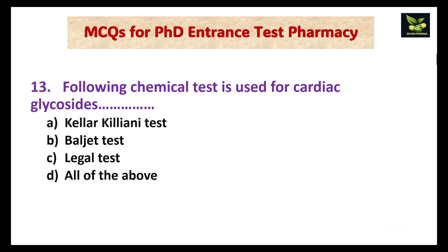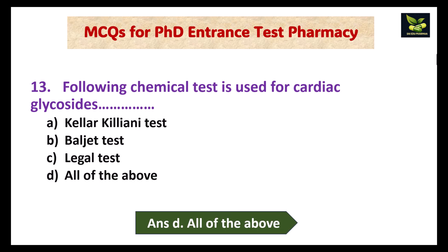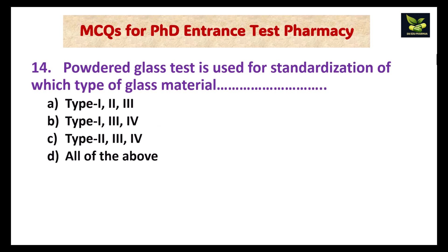Which of the following chemical tests is used for cardiac glycosides? Options: Keller-Kiliani test, Baljet test, Legal test, or all of the above. The answer is all of the above.